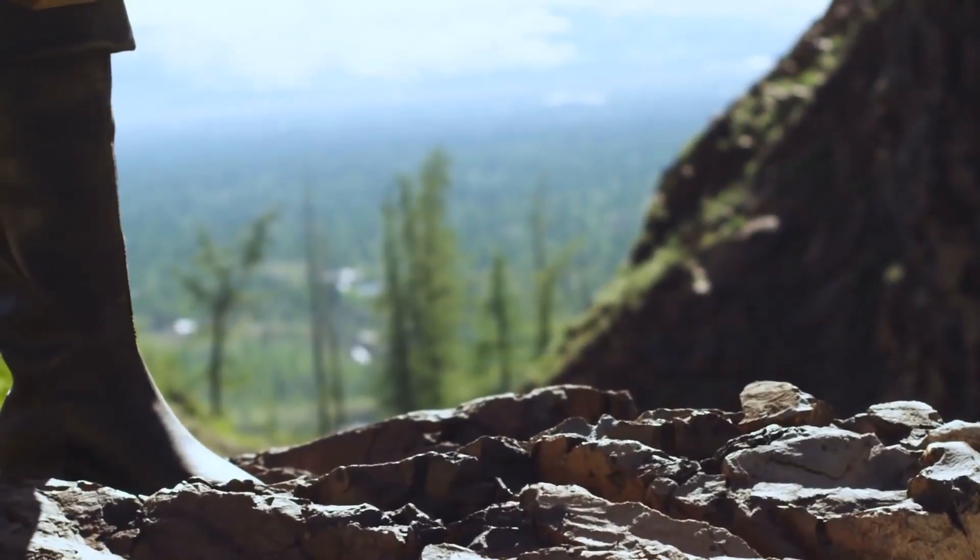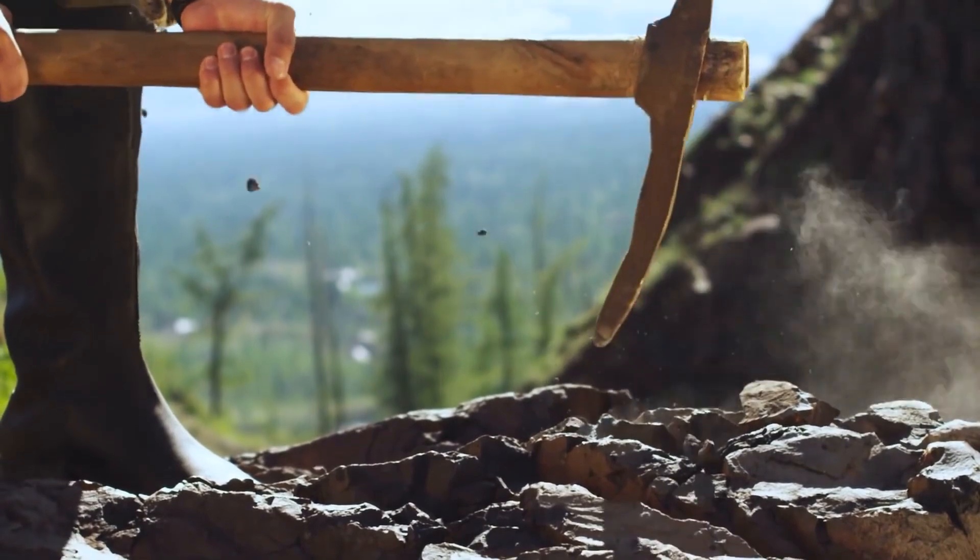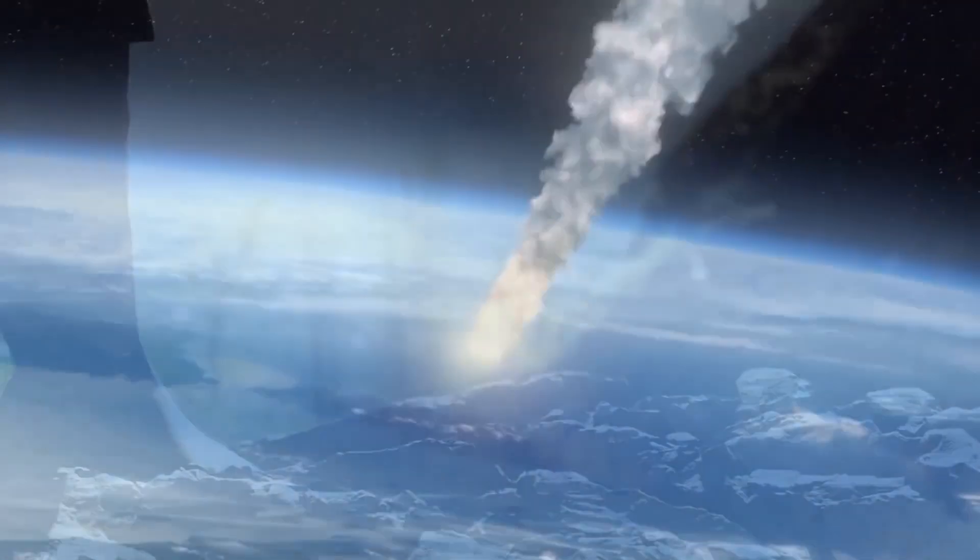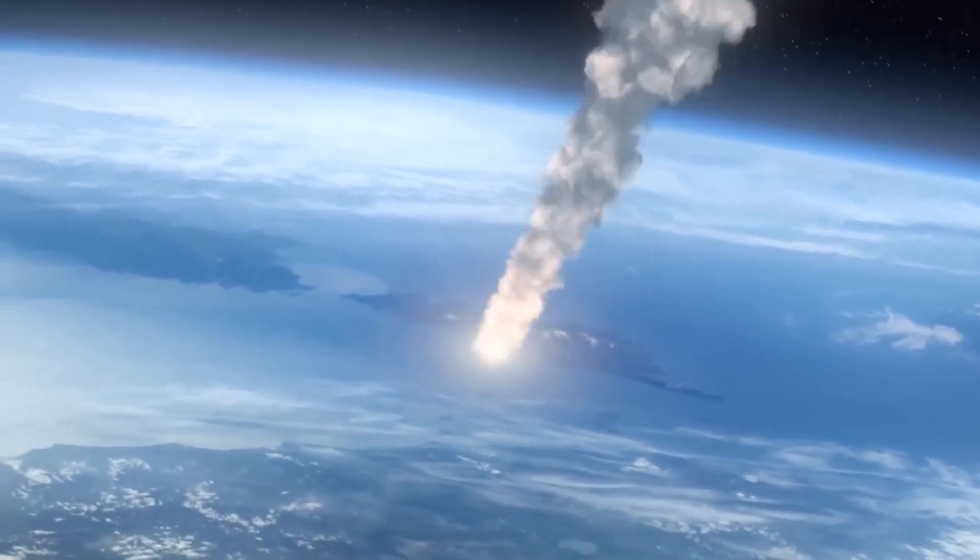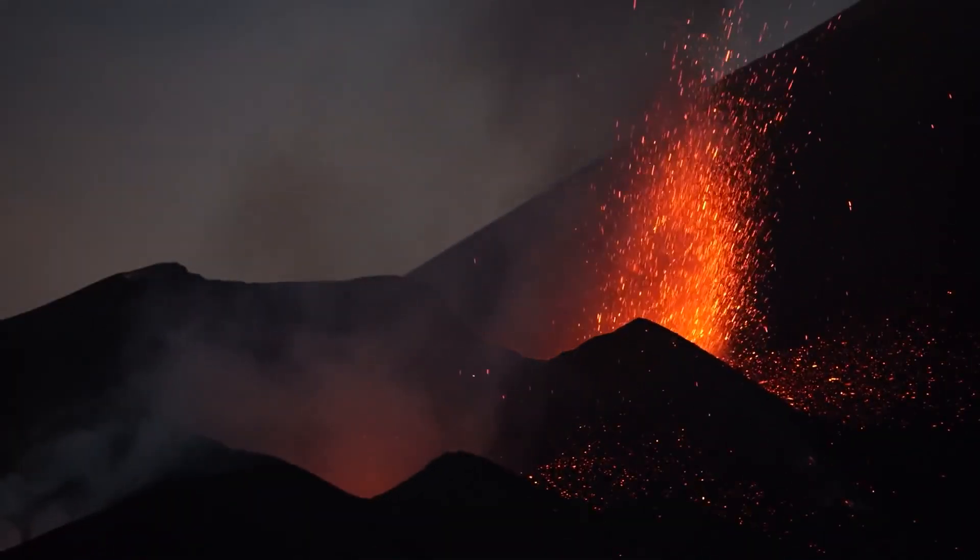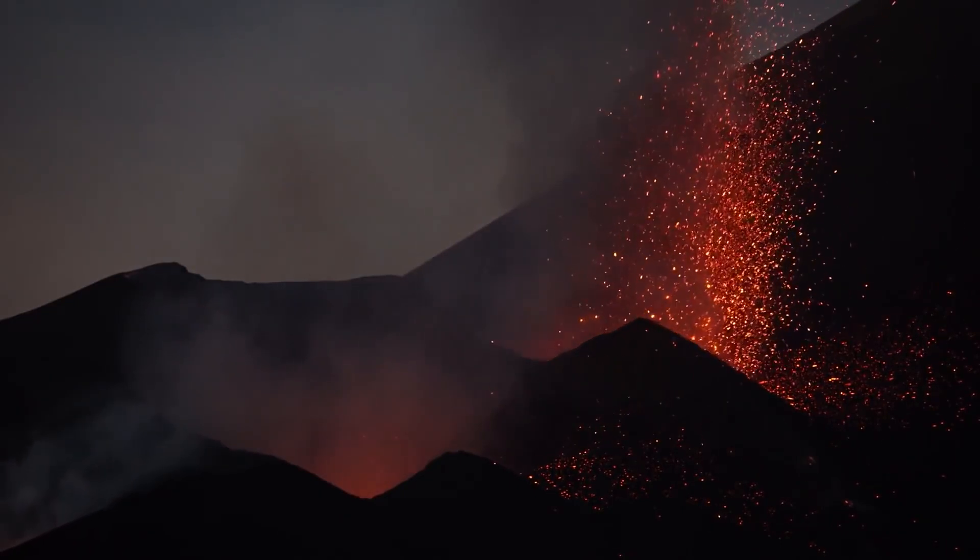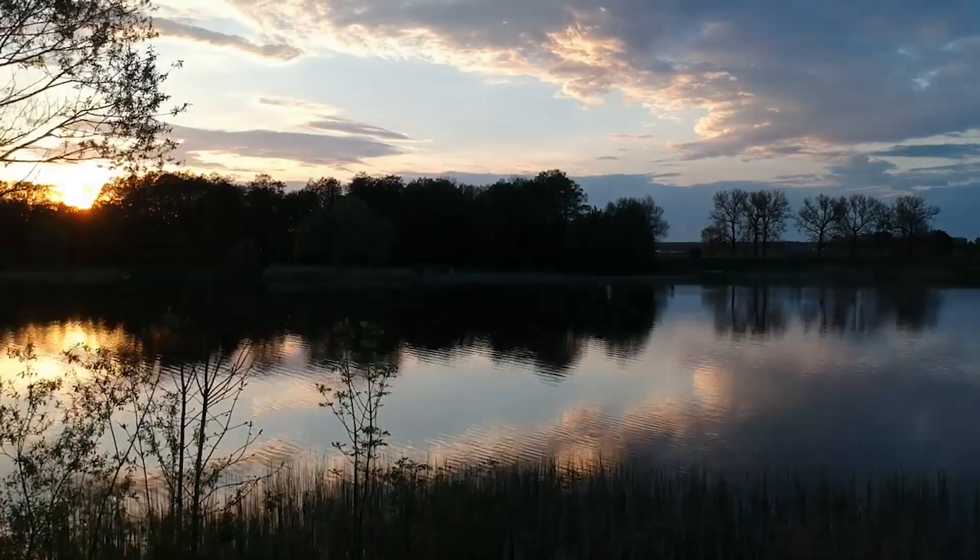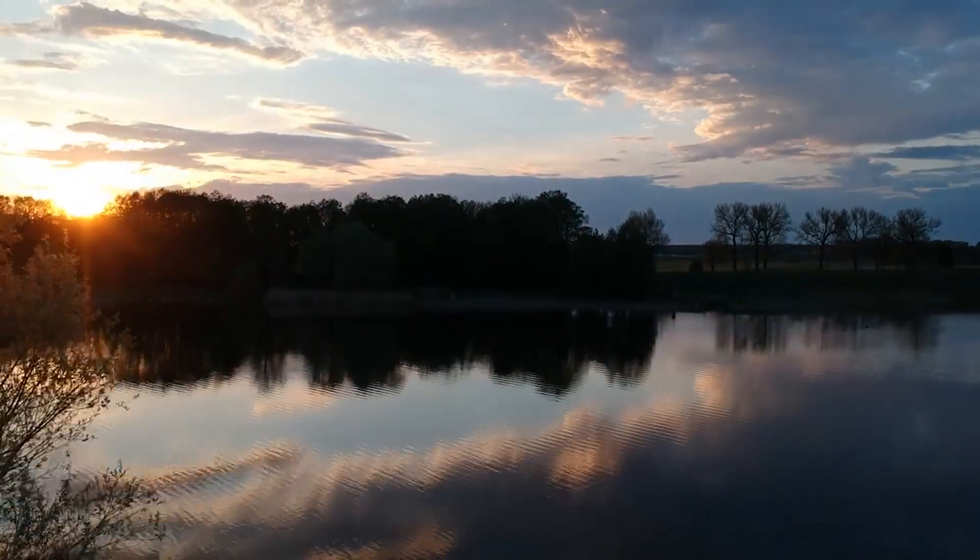The layer of debris, ash, and soot left behind by the asteroid collision is still visible in the sediment of the Earth today as a thin black stripe the width of a notepad. The Tertiary Period and Cretaceous Period are separated by this, which is known as the K-T Boundary. Both above and below the K-T layer, mysteries abound.